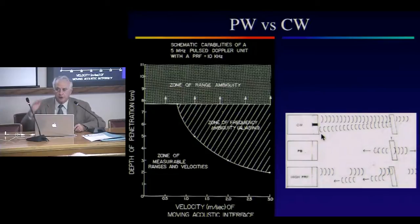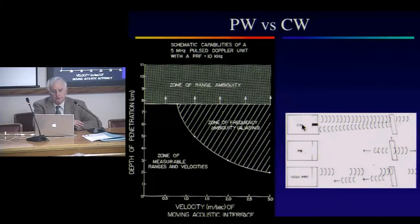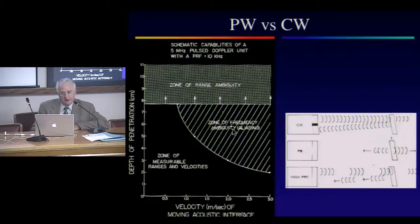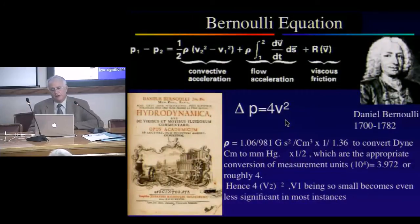The difference between pulsed wave and continuous wave Doppler is that pulsed Doppler is range specific while continuous wave Doppler — because it doesn't rely on a pulse signal — is frequency specific but range ambiguous. So you have a choice of either frequency or range specificity depending on which modality you use.